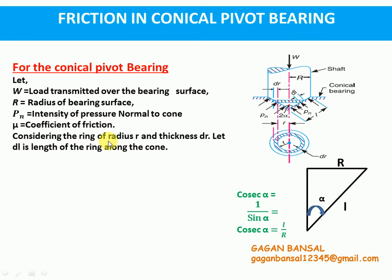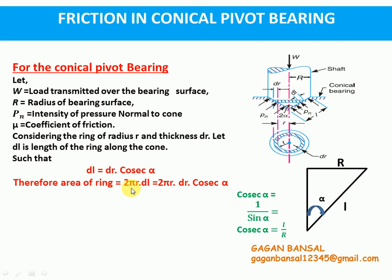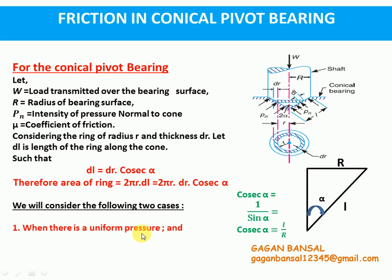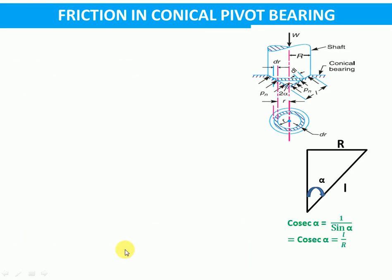Consider a ring of radius r and thickness dr. Let dL be the slant height — the length along the cone — such that dL equals dr times cosecant alpha. Therefore, the area of the ring would be 2πr·dL, and since dL equals dr·cosecant alpha, the area of the ring will be 2πr·dr·cosecant alpha. Now we will consider two cases: first when there is uniform pressure, and second when there is uniform wear.